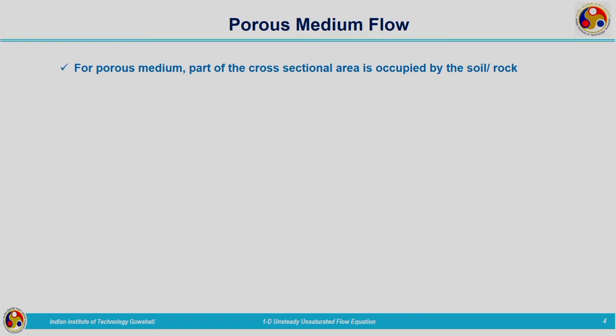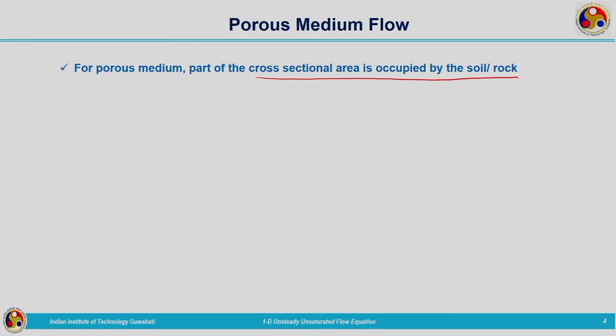Assuming that the flow taking place through the tiny pores within the porous media can be considered as laminar flow, the same concepts applicable to laminar flow in a closed pipe conduit are utilized here. For a porous medium, part of the cross-sectional area is occupied by soil or rock, but in the case of pipe flow, the entire cross section is occupied by the flow. So Q by A does not equal the actual velocity of flow.